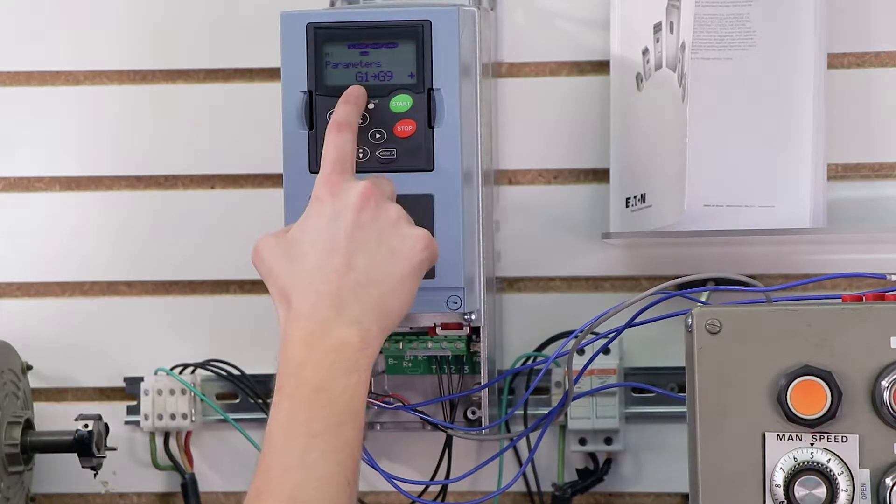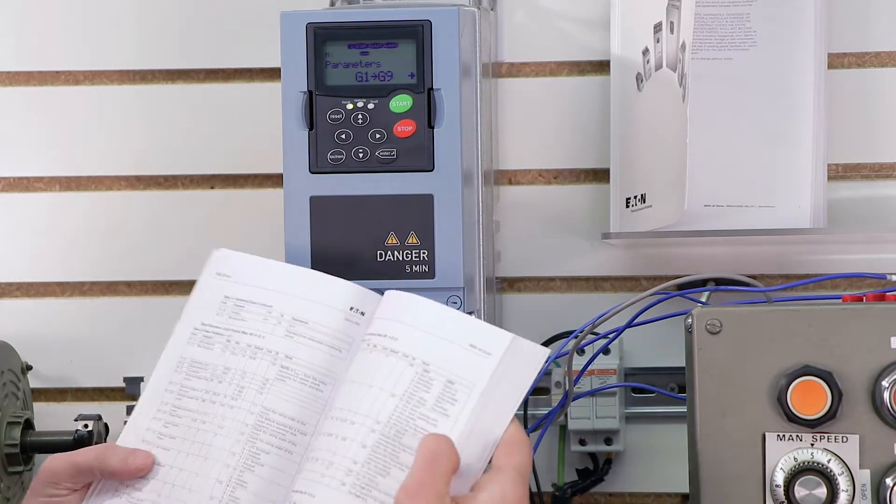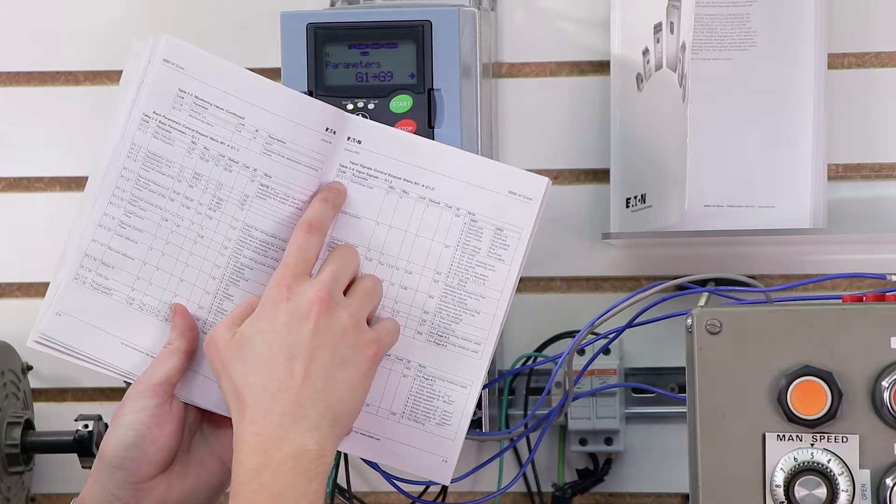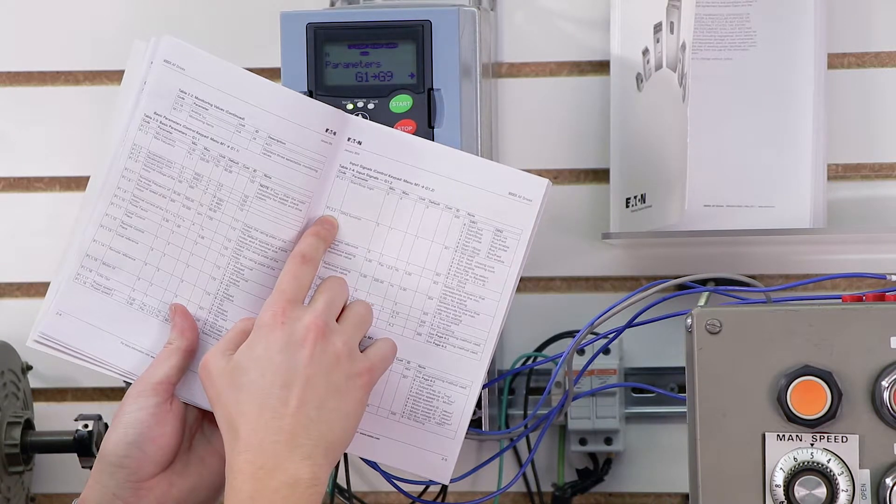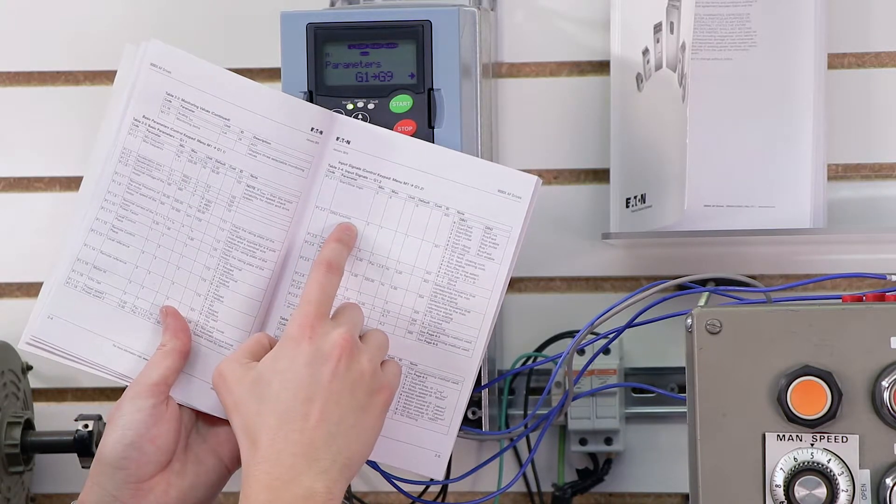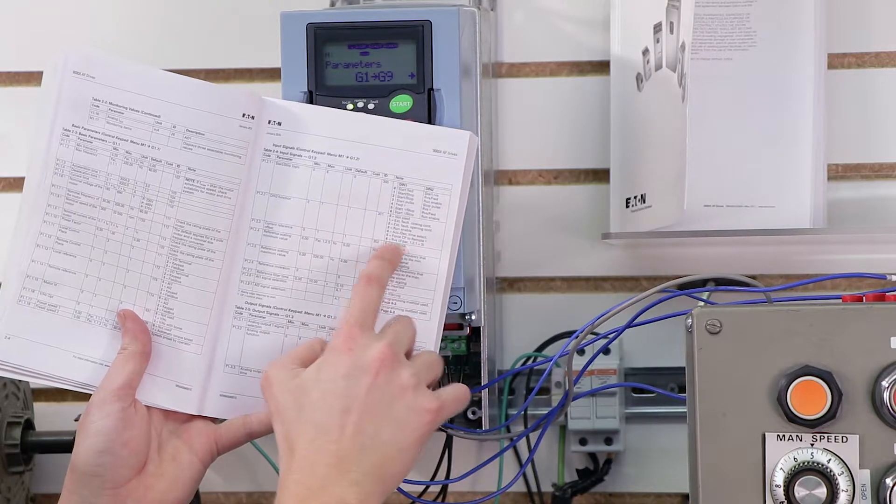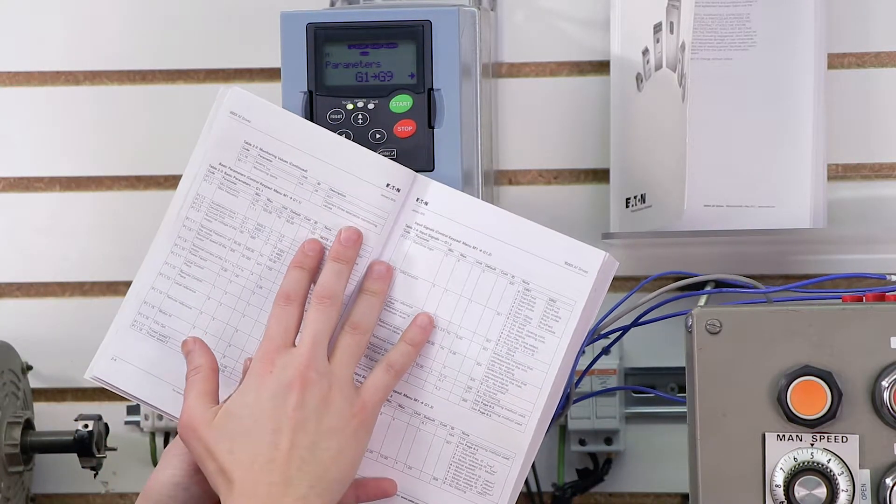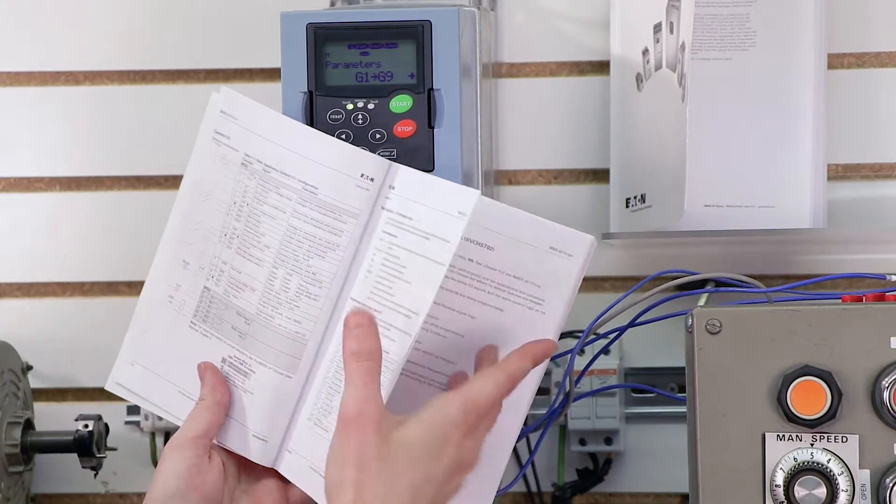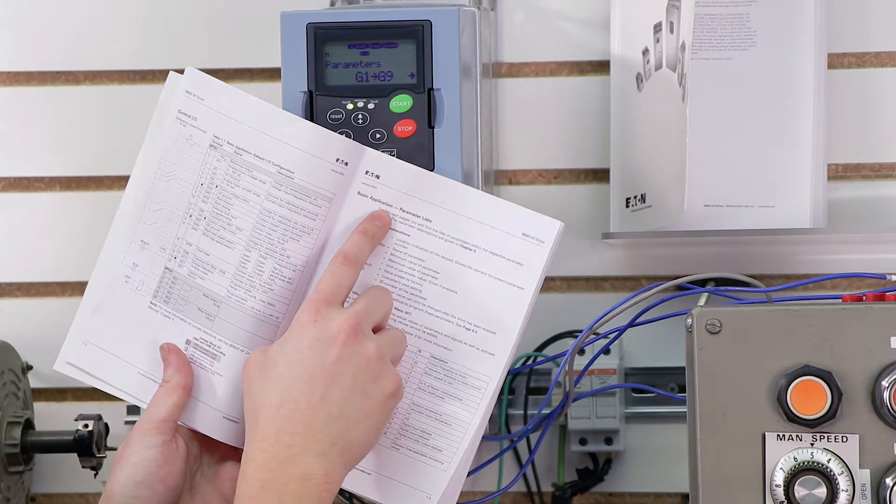And we're looking for parameters G1 through G9. Now, if I pull out my manual again, let me show you which parameters we're going to be modifying here. We're going to be modifying parameters 1.2.1 and 1.2.2. These particular parameters are our start-stop logic, and our digital input 3 function, which is going to be our reverse, we're going to be setting that to reverse here, which is number 6. Now before it will let me actually change these parameters, if you recall in our previous video, we're actually on the generic or the basic application.